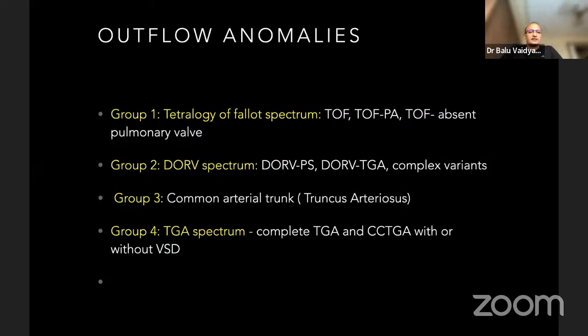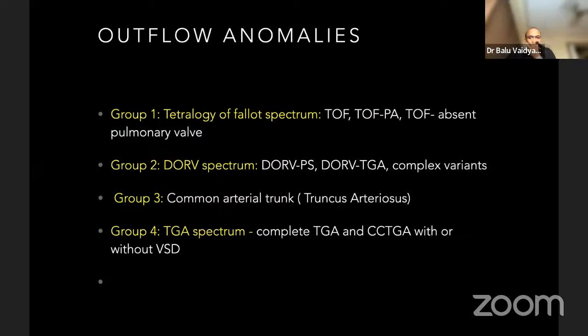The double outlet right ventricle spectrum is so complicated that you could keep talking about DORV. I will summarize the basic concepts. Then you have the common arterial trunk, also called truncus arteriosus. And then we have transposition — there was a question about TGA, CCTGA, etc. These four groups of lesions are very common and represent a very large number of conditions.